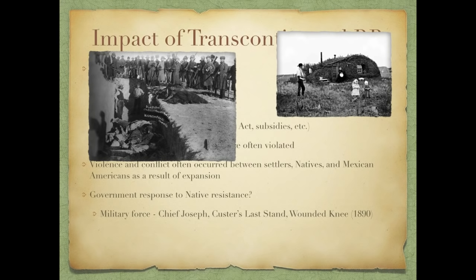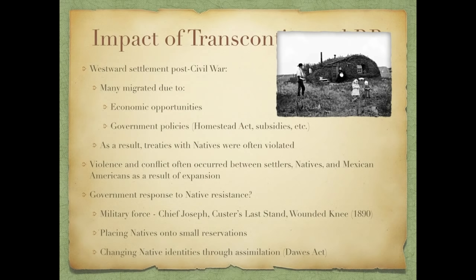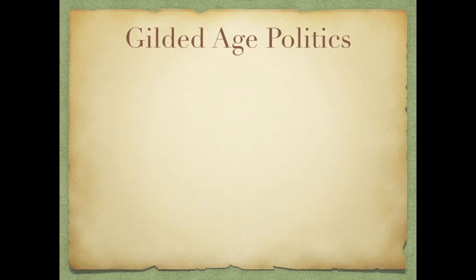The government's response to native resistance was conflict and military force. Examples include Chief Joseph, who tried to flee and finally gave up, saying 'my heart is heavy, no longer will I fight.' Custer's Last Stand was when natives killed General Custer and all his men. The Battle of Wounded Knee in 1890 was essentially the last battle between the U.S. military and natives, in which hundreds of Native Americans — most notably women and children — were killed. Natives were placed on small reservations, and their identities were changed through assimilation, most notably via the Dawes Act.